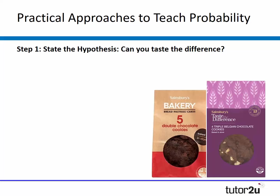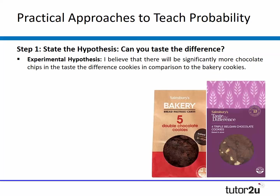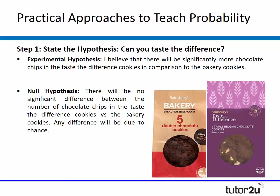The first stage is stating the hypothesis. We're going to say that the Taste the Difference cookies from Sainsbury's contain far more chocolate chips than the standard bakery ones. The experimental hypothesis might read: there will be significantly more chocolate chips in the Taste the Difference cookies in comparison to the bakery cookies. The null hypothesis: there will be no significant difference between the number of chocolate chips in the two types of cookies, and any difference will be due to chance.